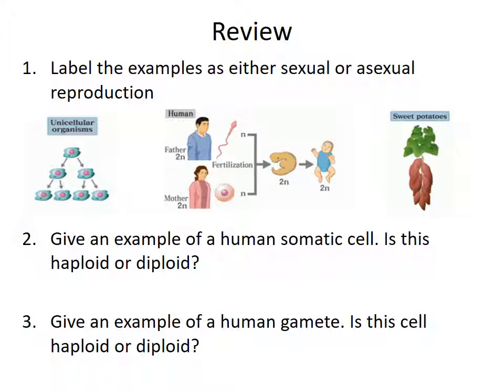In the next example, we've got human reproduction. There's a male and a female with sperm and egg, and the sperm and egg fuse to make a zygote, which grows up to an embryo, which grows up to a baby. So this is going to be sexual reproduction.